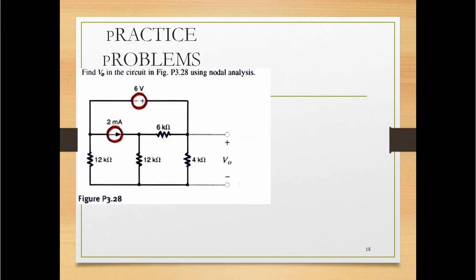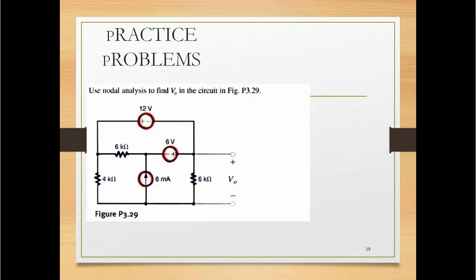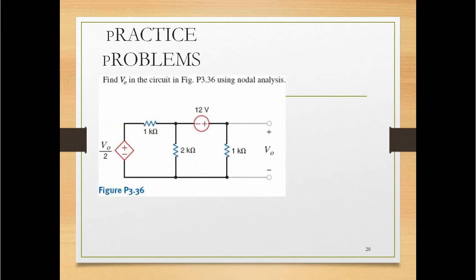A practice problem is given: find V0 in the circuit using nodal analysis. There are 3 loops and 2 voltage sources given. Use node analysis to find V0, where V0 divided by 2 is given.